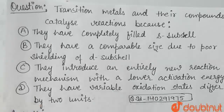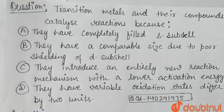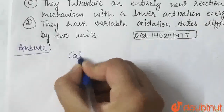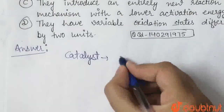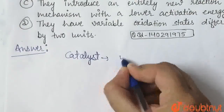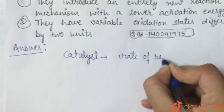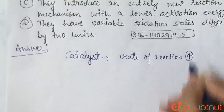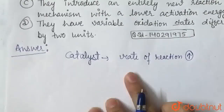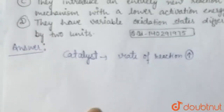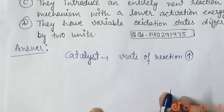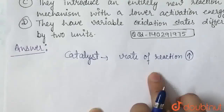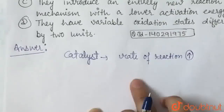Transition metals are very good catalysts. What are catalysts? Catalysts are substances which increase the rate of reaction without participating in the reaction. They do not participate in any reaction, but if a catalyst is present, the rate of reaction will increase.